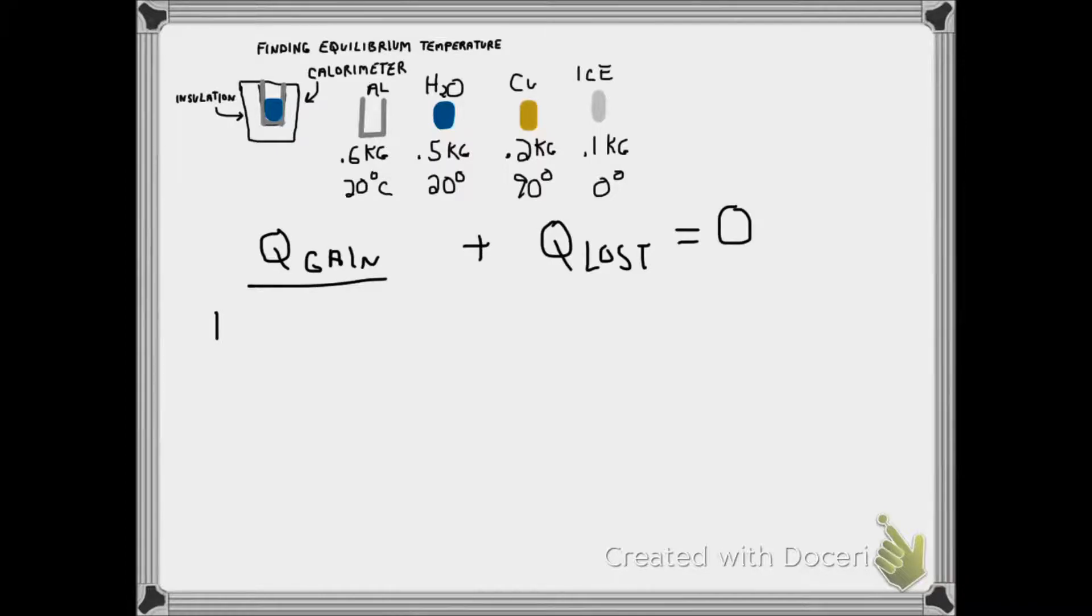So what's gaining heat here? Well, basically the ice cube, and then the water that used to be ice, which we'll call the ice water. That would be 0.1 kilograms of water. To figure out what's going on with that, let's do a temperature versus heat graph.